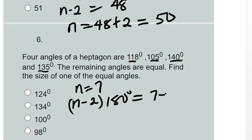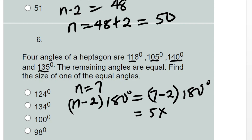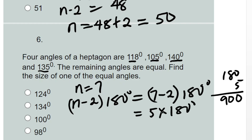That is seven minus two, times 180 degrees, which is five times 180 degrees. So 180 multiplied by five gives us 900 degrees. Now we need to add the four given angles together.